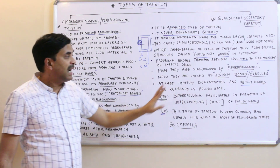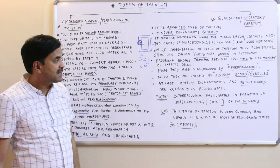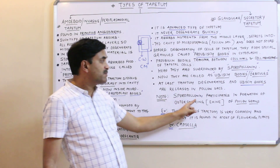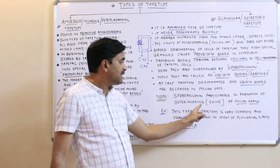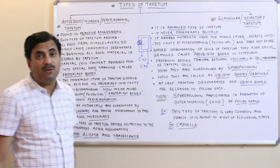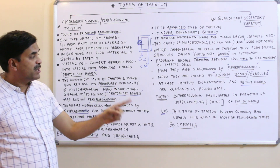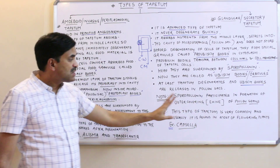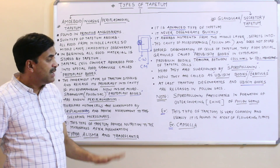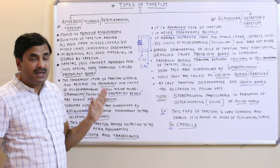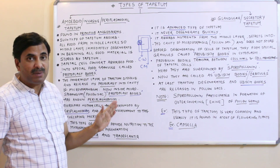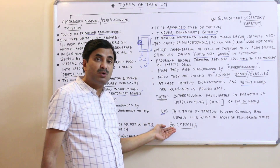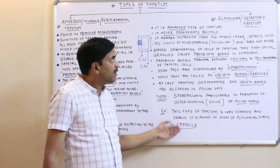At last, at very late stages, the tapetum degenerates and these Ubisch bodies are released into the pollen sac. Remember that sporopollenin participates in the formation of the outer covering of the pollen grain, which is also called the exine. This type of tapetum is very common and is found in most flowering plants.